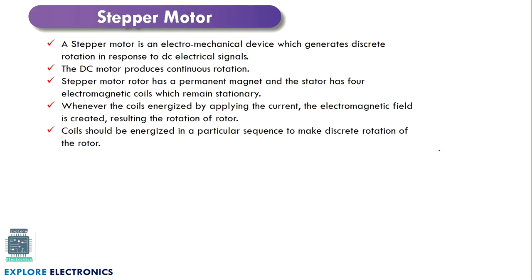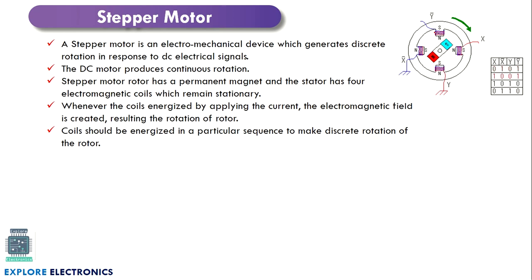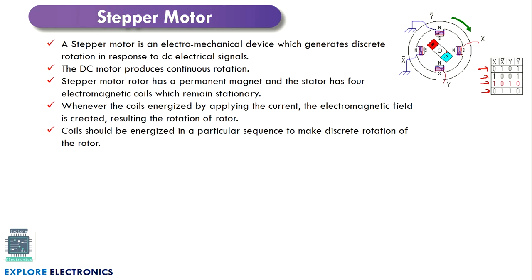Next we have the stepper motor. Stepper motor is also an actuator and can be used as an output device. This stepper motor uses one permanent magnet and 4 coils. The coils are wound and we energize these coils to act as a magnet. These 4 different values we pass make the permanent magnet rotate.